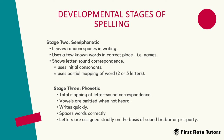In the third stage, the phonetic stage, there is a total mapping of letter and sound correspondence, and vowels tend to be omitted if children can't hear them. Children also start writing more quickly and spacing words more correctly, with letters assigned strictly on the basis of sound — for example, 'bar' spelled B-R or 'party' spelled P-R-T.